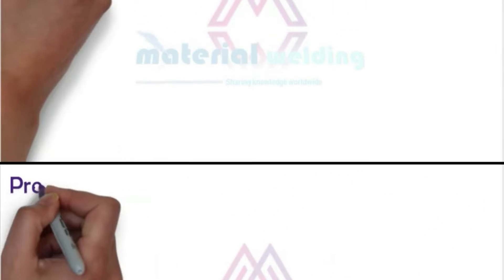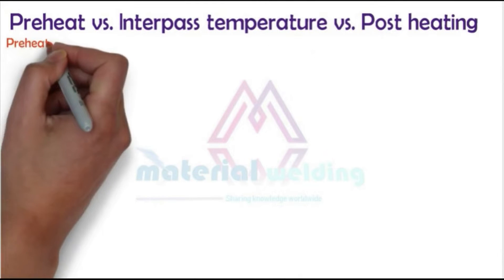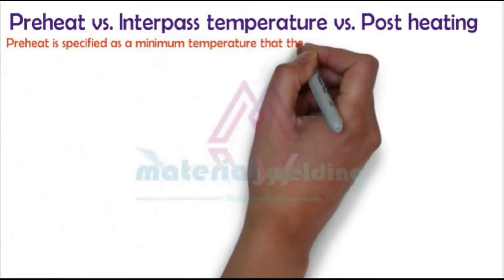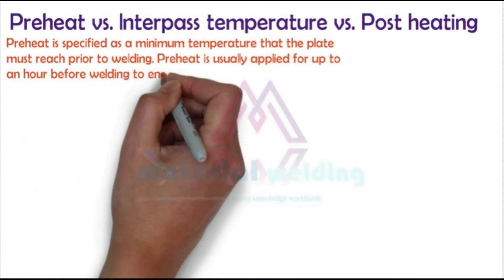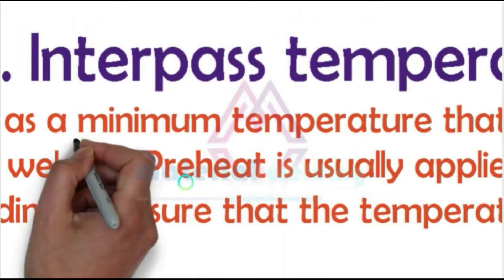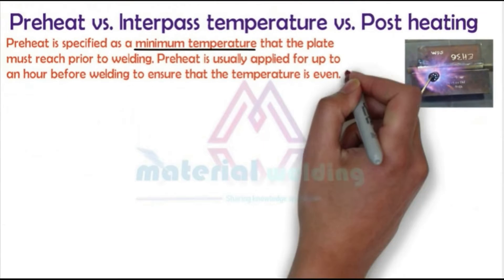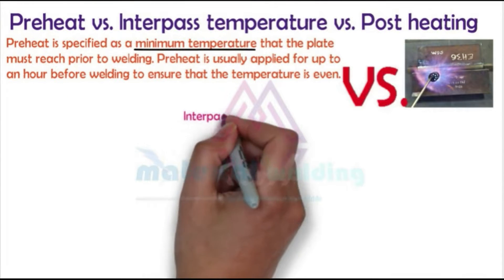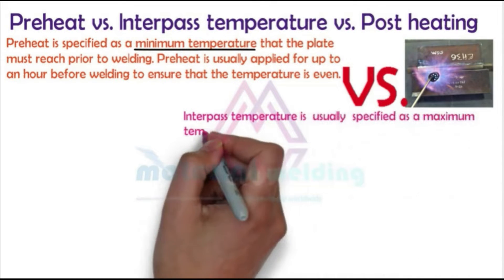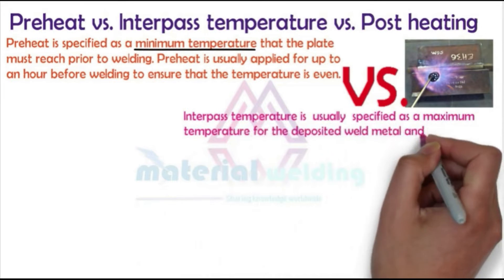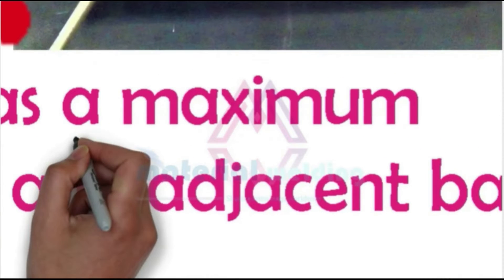There is always confusion between preheating vs interpass vs post-heating in welding. Preheat is the temperature of the base metal in the volume surrounding the point of welding. It is specified as a minimum temperature that the material must reach before welding, and is usually applied for up to an hour before welding to ensure the temperature is even. Interpass temperature, on the other hand, is specified as a minimum adjacent base metal temperature before the next welding pass is started, but compared to preheat, interpass is the maximum temperature that has to be considered.